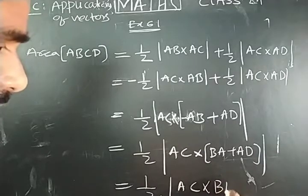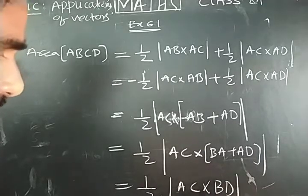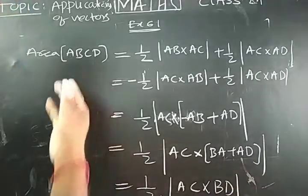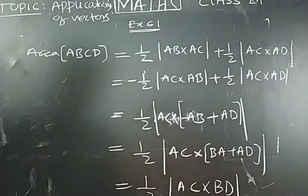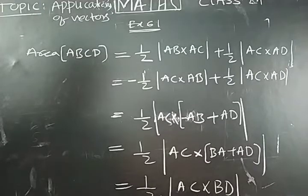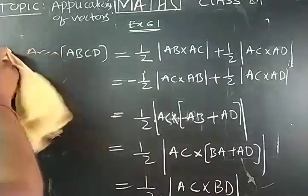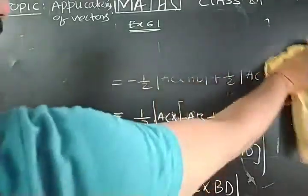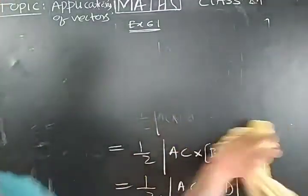So what you will get is: area of quadrilateral = half of AC cross BD, which are the two diagonals of the quadrilateral. This completes the proof.